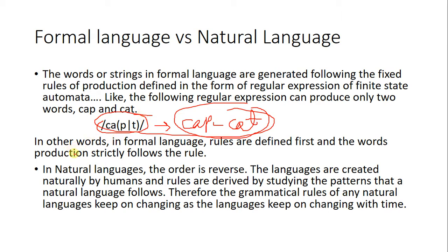Whereas in natural languages, the languages are developed naturally — like English, Punjabi, Chinese, or Japanese — and the rules are not defined before the production of the language. The rules are actually derived by studying the patterns that a natural language follows. With the passage of time, all natural languages keep on evolving and changing, and similarly the grammar of natural languages keeps on changing, because grammar depends upon the language — the natural language doesn't depend upon the grammar.